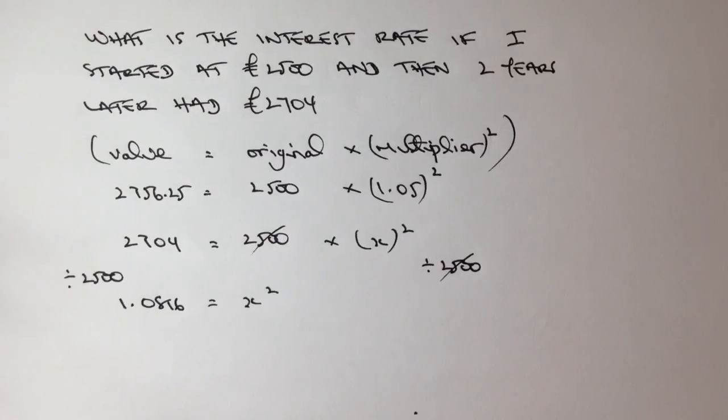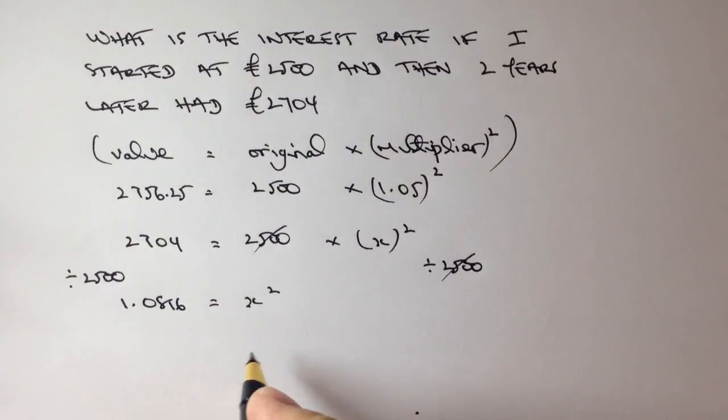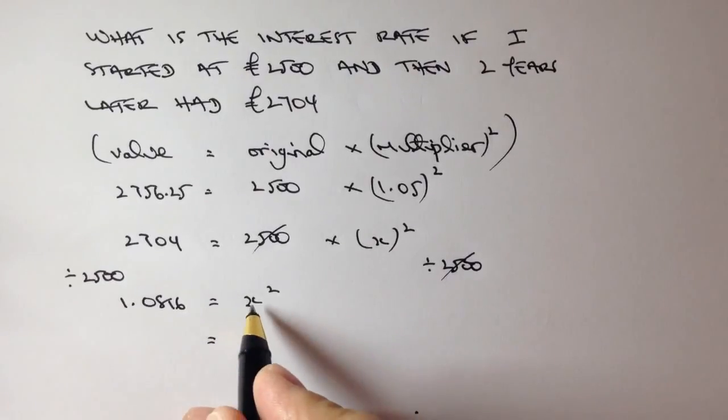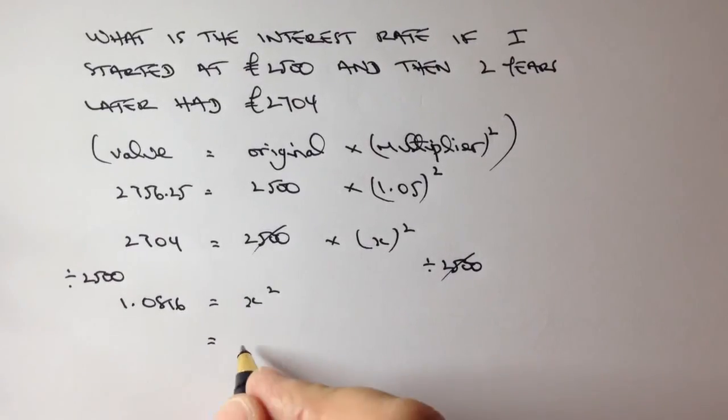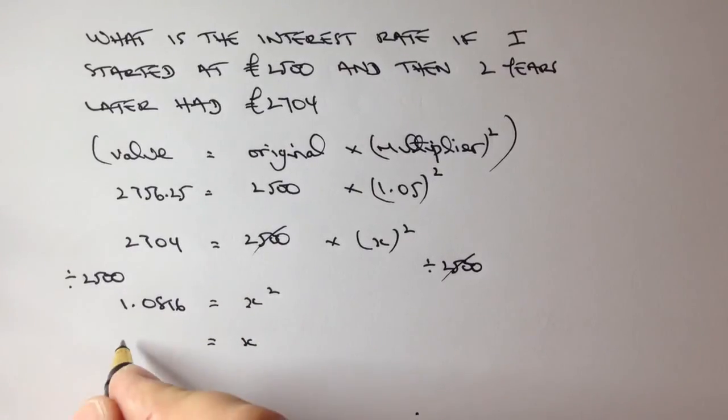So to get the value of X on its own—sorry, X squared—to get X on its own, what I'm going to do is square root both sides. And if I square root both sides, I've got X squared, and square rooted would be X. And then this, square rooted very handily, is 1.04. Brilliant.